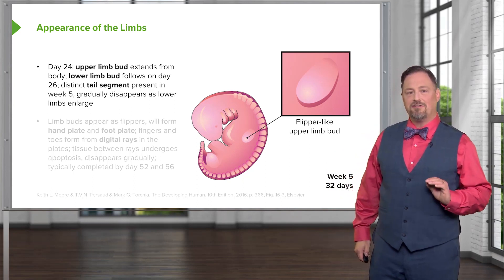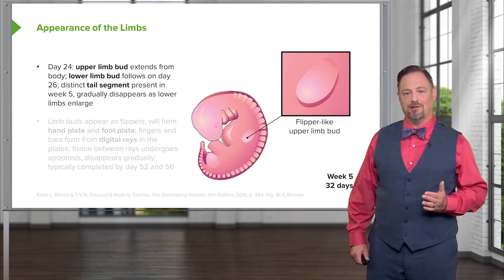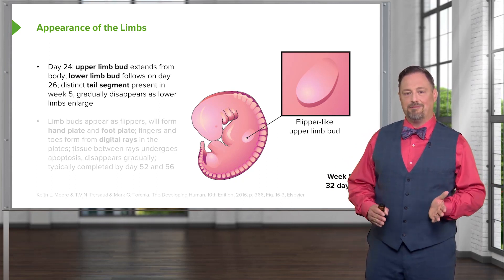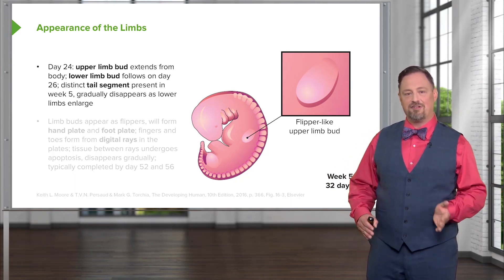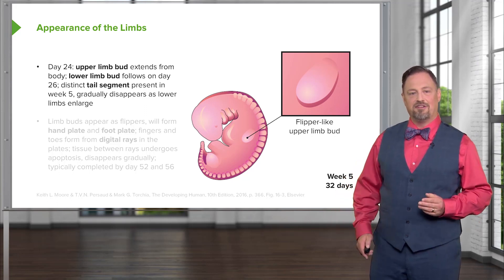Initially there is a tail segment present between the two lower limbs, but it gets displaced, and then the two lower limbs grow and the tail segment disappears.